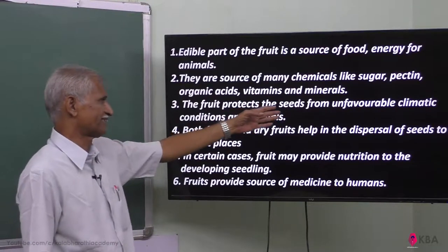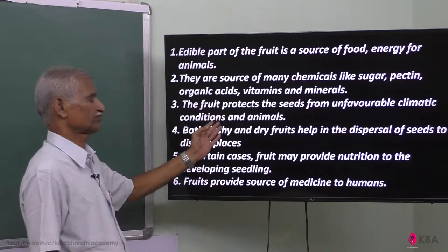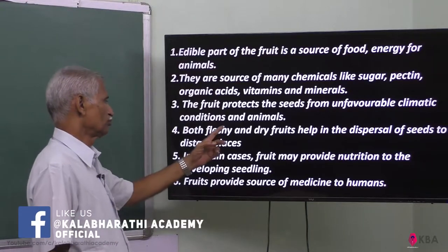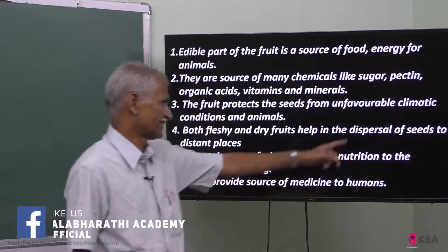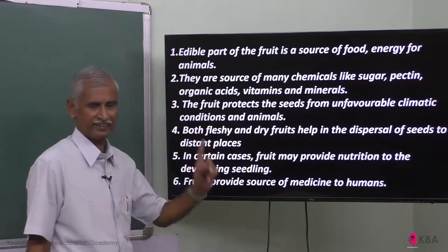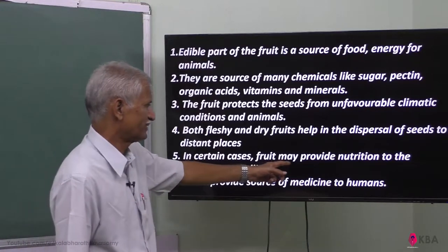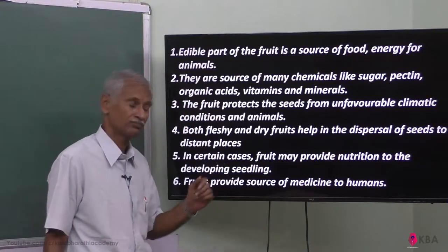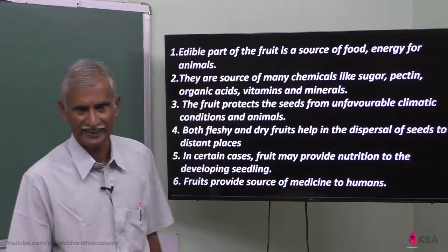The fruit protects the seeds from unfavorable climatic conditions and protects them from animals. Both fleshy and dry fruits help in the dispersal of seeds to distant places — that is the main function. In certain cases, the fruit may also provide nutrition to the developing seedling.